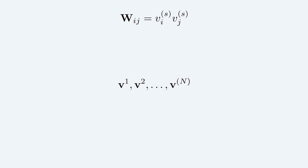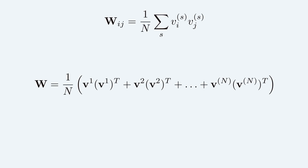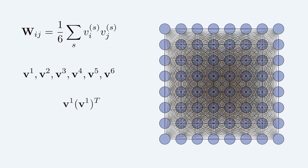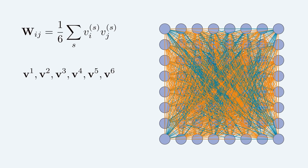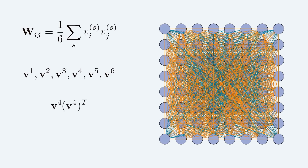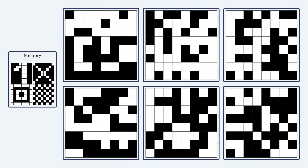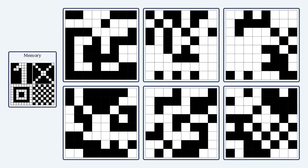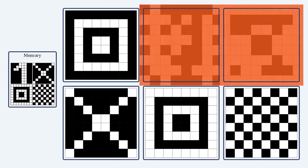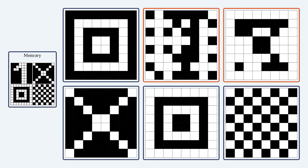How do we store multiple patterns at once in the same network? We compute the outer products for all desired memory patterns, giving us a matrix for each, and then we average those matrices. However, things start to become more complicated. There's no way to guarantee that all memory patterns are stable states — the memories will start talking to each other, fusing into new memories. Here's the network with four memories: it sometimes converges to one of the memory states, but in other cases it converges to something in between, a merging of memories, which is almost a kind of human mistake.